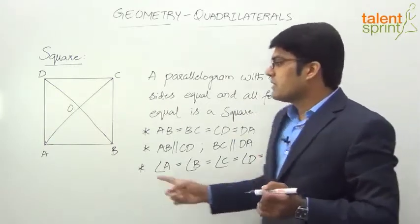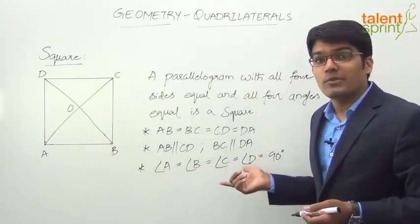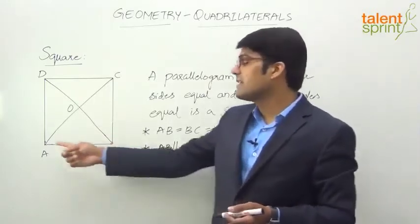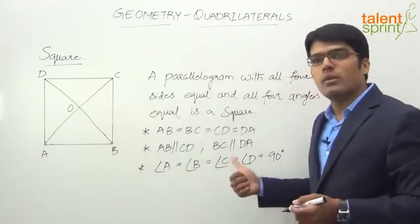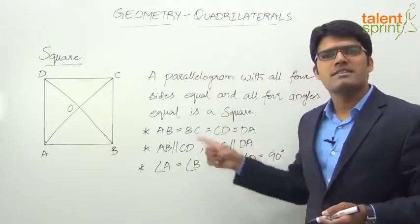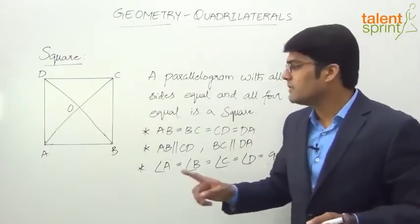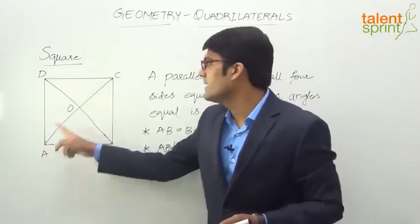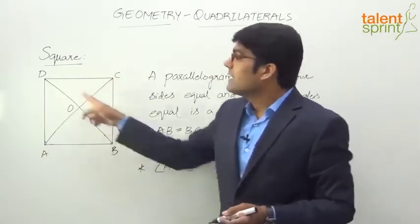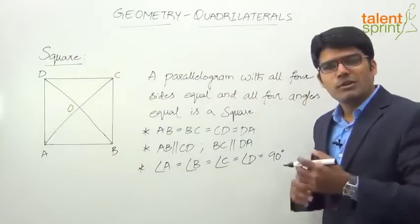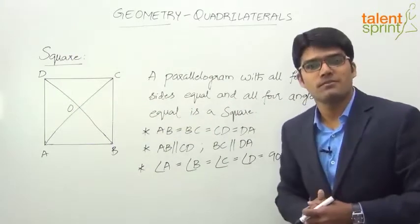Adjacent angles will add up to 180 degrees, which is the property of a parallelogram. Angle A plus angle B: 90 plus 90 equals 180. The same is the case with any other pair of adjacent angles. Also, the opposite angles have to be equal — angle A equals angle C, and angle B equals angle D. So you see that all the properties of parallelogram are satisfied, since a square is a special case of parallelogram.